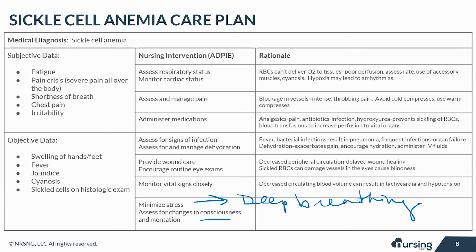Assess for changes in consciousness and mentation. The brain is super sensitive to fluctuations in oxygen balance. Decreased perfusion to the brain may result in confusion, loss of consciousness, and even stroke.